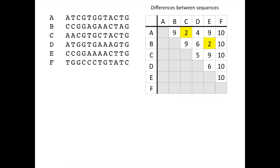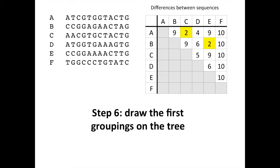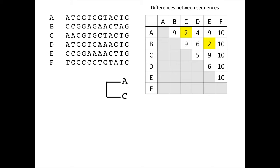With this information, we can draw the first groupings on our phylogenetic tree. We will group A and C together to reflect the fact that these two sequences show the closest relationship to one another. And we will group B and E together to reflect the fact that they also show an equivalently close relationship to one another.